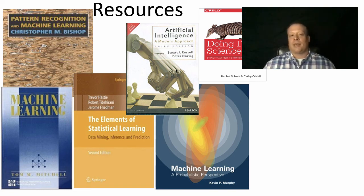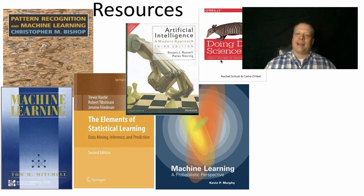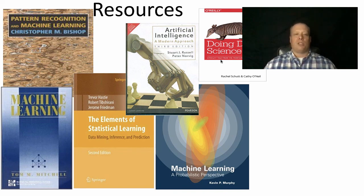Machine Learning: A Probabilistic Perspective is one of the more recent editions in this space. I also point out the Artificial Intelligence book by Russell and Norvig — the first edition was the one I used in my intro to AI class, well over 20 years ago. Doing Data Science is a more recent text that really dives into how to approach the data science process. The O'Reilly books I find very useful. There are no required texts for the course — these are additional resources — but I'll provide links to materials whenever possible. Thanks everybody, and I look forward to working with you.